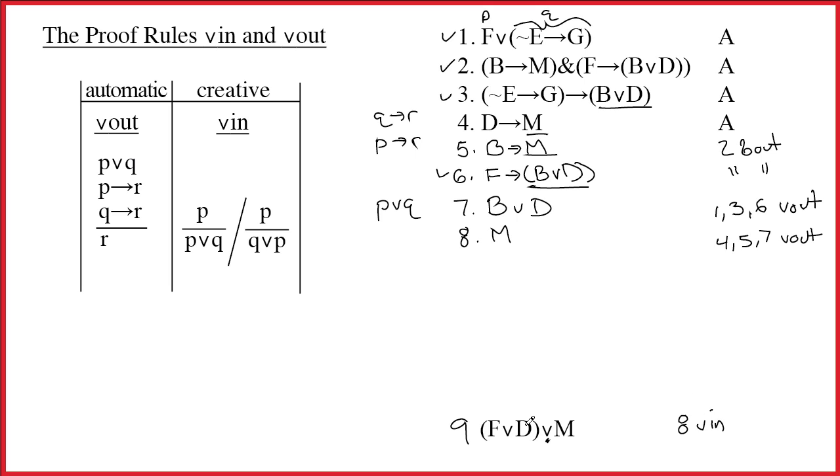I pulled it out of the air. Because that's what this rule allows me to do. Notice this d right here has nothing to do with the d that showed up above. Nor does it have anything to do with the f from up above. All we did was take the m by itself and wedge in the other parts. We pulled them out of the air. Because that's what wedge in is all about.